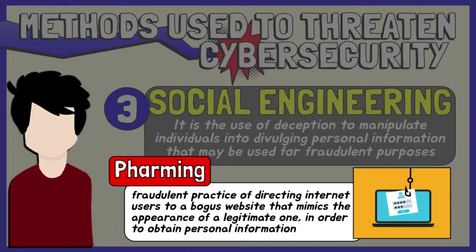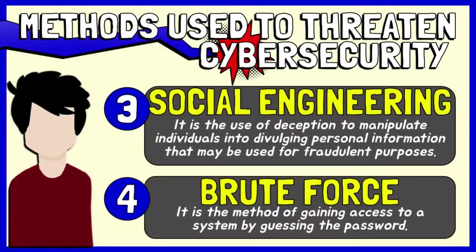Pharming is the fraudulent practice of redirecting users to a fake website that mimics the appearance of a legitimate one, with the goal of stealing personal information such as passwords, account numbers, and other personal information. Pharming can occur even when you click an authentic link or type in the website URL yourself, because the website's domain name system or DNS has been hijacked by a cyber criminal. Brute force is a method of gaining access to a system by guessing the password. It requires the use of software that guesses thousands of passwords at a time until the right combination of characters is selected. For example, it's still possible to use brute force software on most Wi-Fi routers because they don't typically limit the number of password attempts you can make. Cyber attacks, therefore, come in numerous forms, and so do the hackers that launch them.